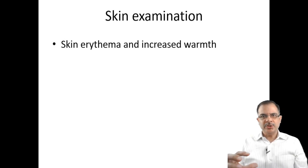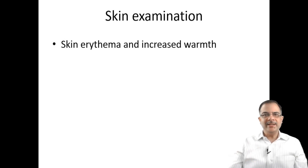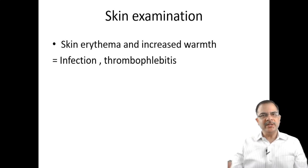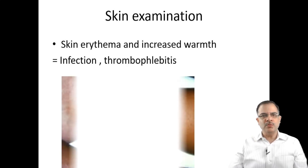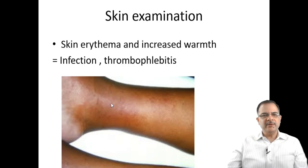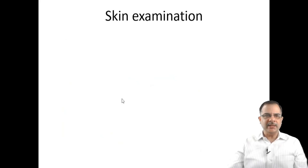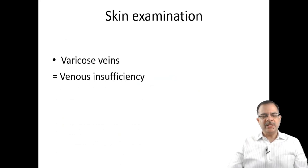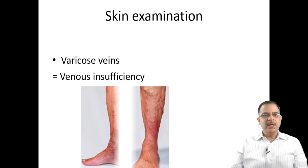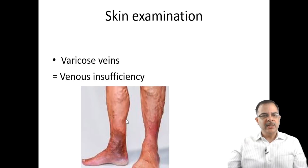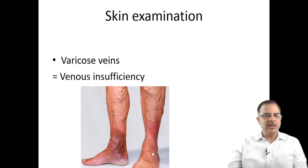Skin examination: redness or increased temperature is seen in infections or thrombophlebitis — the skin will be shiny, tight, with increased temperature and redness. Varicose veins — dilated tortuous veins greater than 3 mm in diameter — are suggestive of venous insufficiency. Due to stasis, ulceration or skin color changes can be seen, especially over the ankle area.